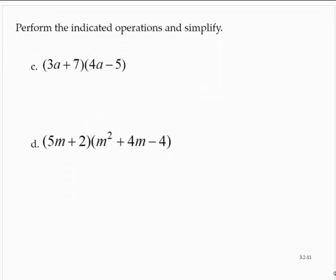Exercise c has 3a plus 7 by 4a minus 5. So this is an implied multiplication. I'll take the 3a and distribute it through the second polynomial, giving 12a squared minus 15a. Then I'll take the 7 and distribute it through the second polynomial, plus 28a minus 35. Combining any like terms, 12a squared plus 13a minus 35.